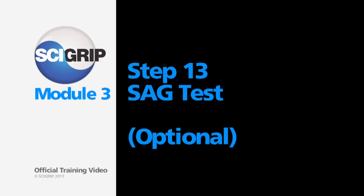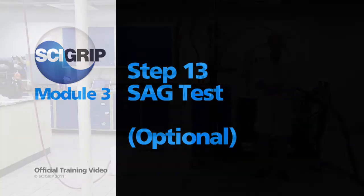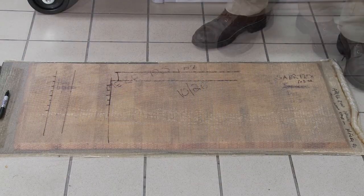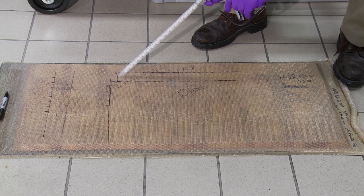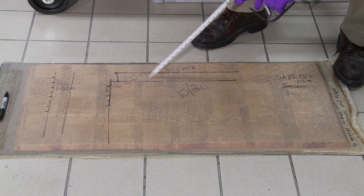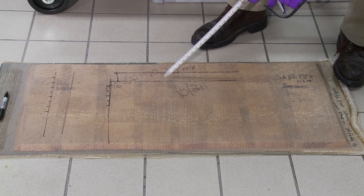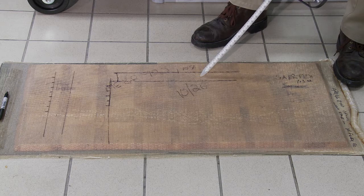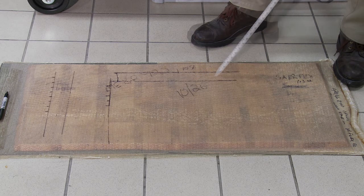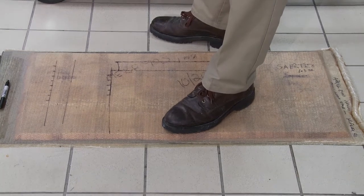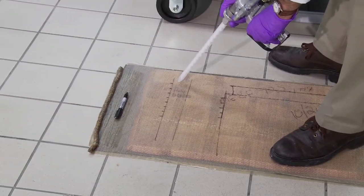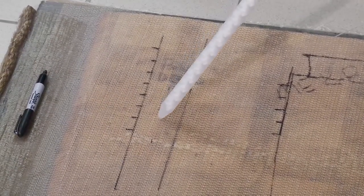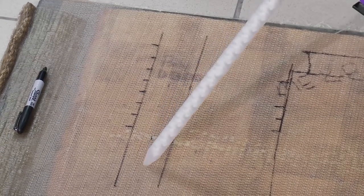Step 13, sag test. The sag test is an optional test that we recommend if you're going to be doing vertical or overhead bonding. To perform this test, I'll dispense a horizontal bead. You can see on the substrate, I've drawn two horizontal lines and I'm trying to size the bead so it fits between the lines. The size of the lines would match up with whatever you expect your largest bead size to be. Next, if you're going to be doing any vertical beads, you can also dispense a vertical bead. Again, you can see I drew two lines, in this case two inches apart, to simulate the largest two inch wide bead that I would expect to be bonding. Now, I'm going to purge until I get a consistent color.